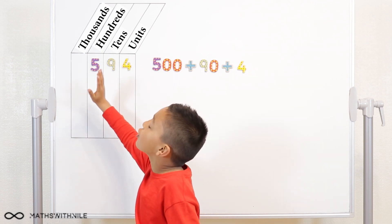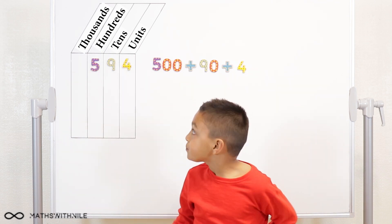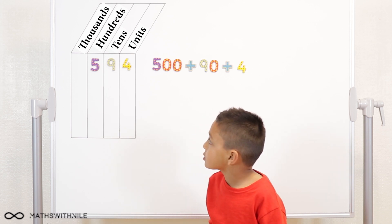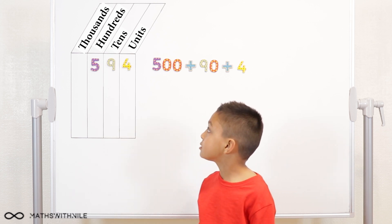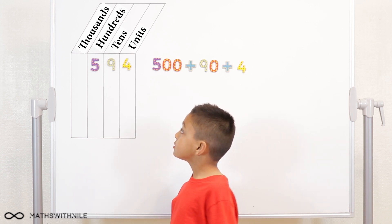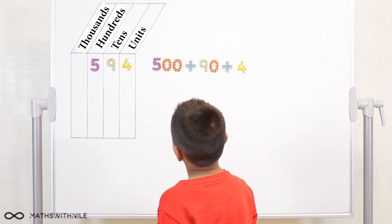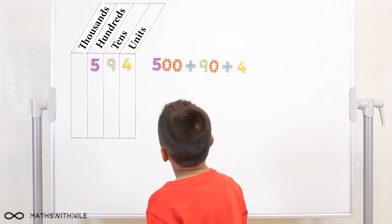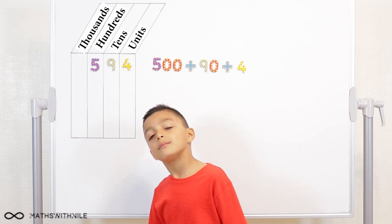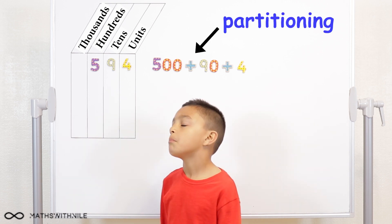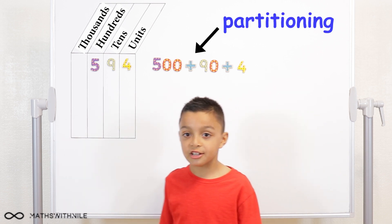We haven't gone on to thousands yet. You see I've split up 594 to those on the right hand side. Do you know what that's called? No. It's called partitioning. Partitioning.